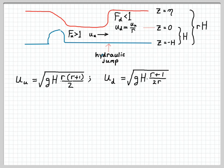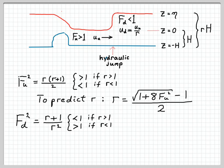So h plus eta times u squared plus half of the gravitational constant times h plus eta squared has to be the same upstream of the jump and downstream of the jump. Using that fact, we were able to do a little bit of algebra and find these expressions for the upstream velocity and the downstream velocity in terms of gravity and the upstream depth h and this deepening factor r.